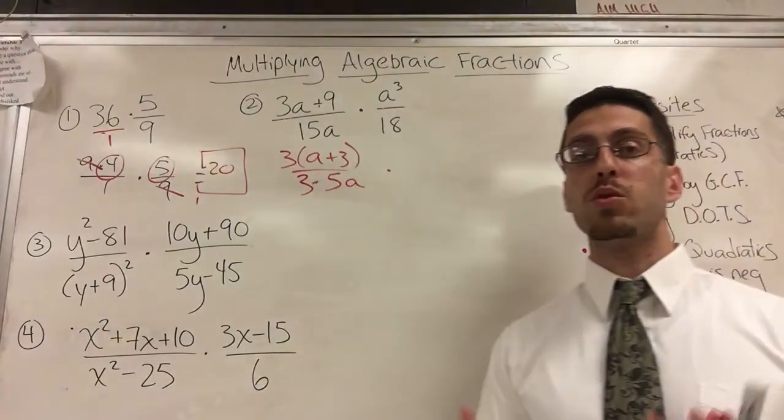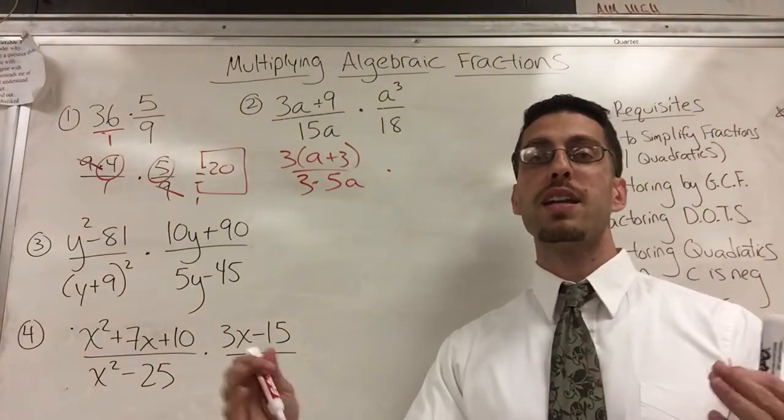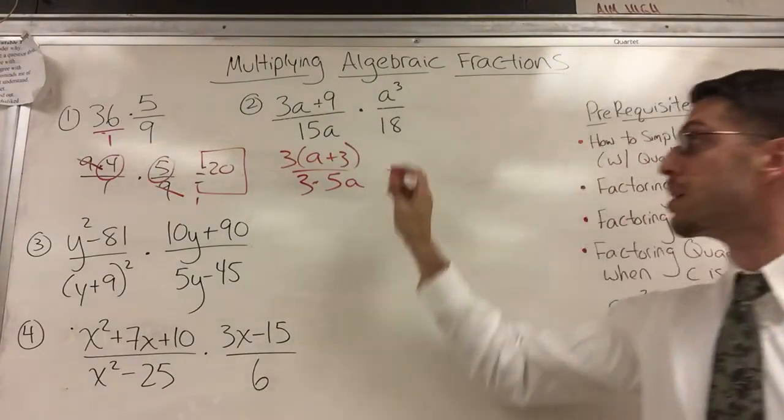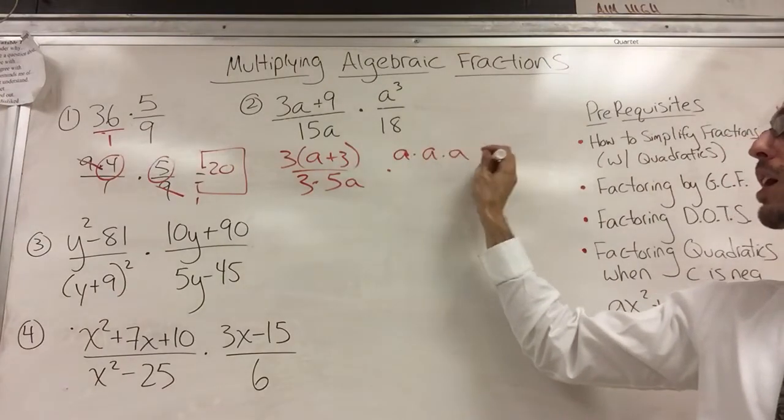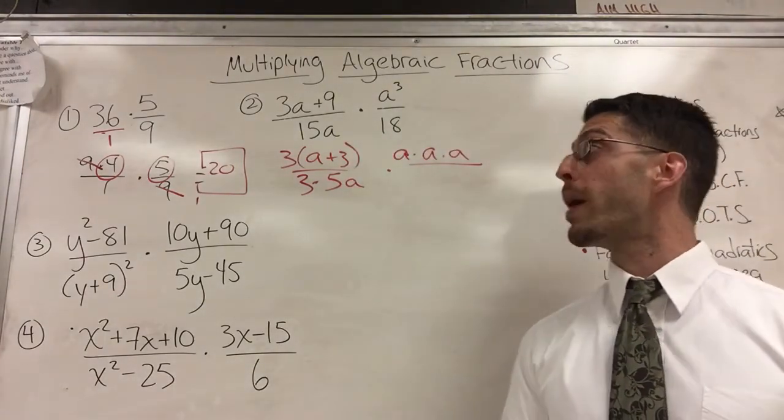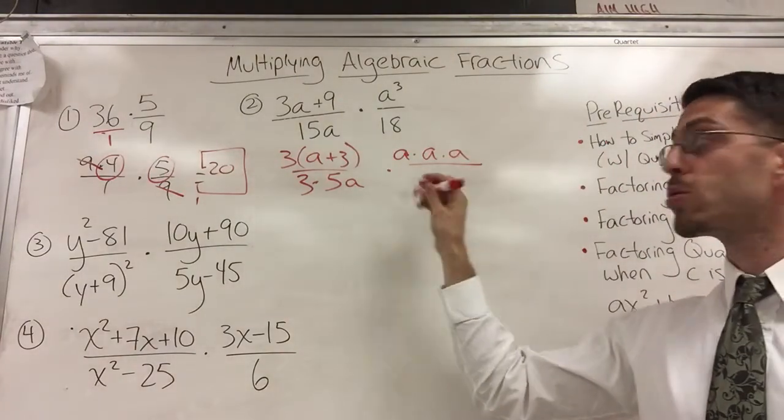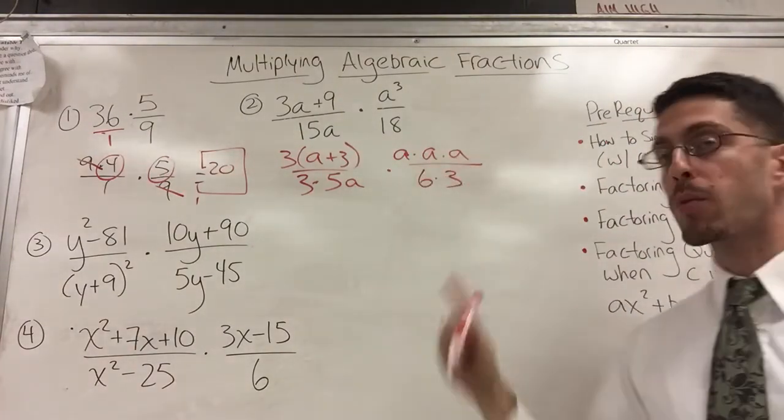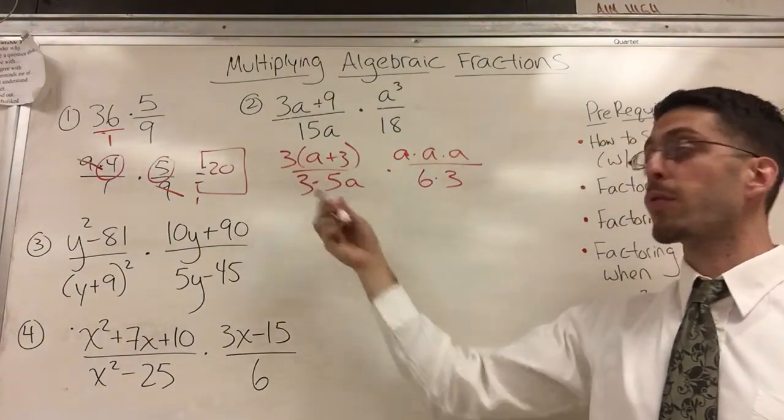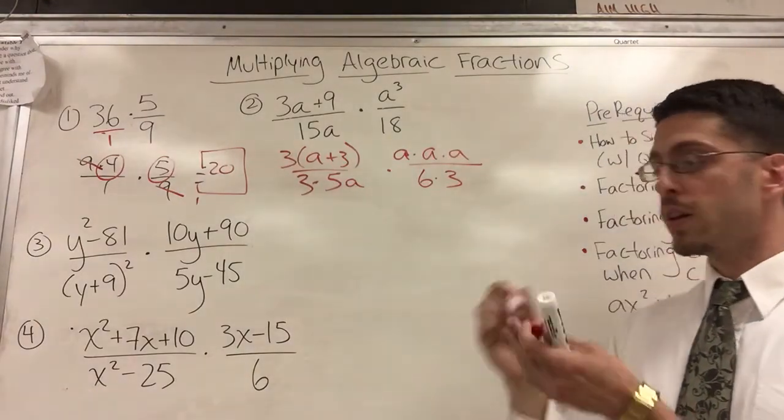A to the third, you can call it factoring. I'm going to expand it. A to the third really just means A times A times A. And then, 18, whether you factor it or not, won't matter in this particular question. But just to be safe, I'm going to write it as either 9 times 2 or 6 times 3. I'm going with 6 times 3 because I see 3, so I might need it. I'm not sure. So,